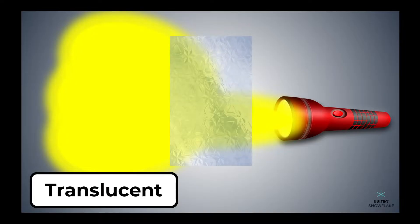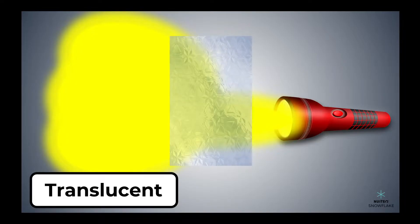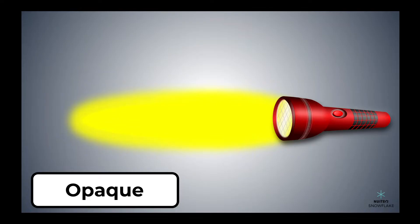If we place an opaque material in the path of the light, it will block the light completely, and no light will pass through.